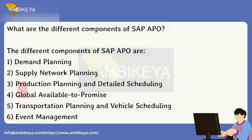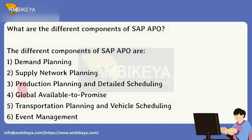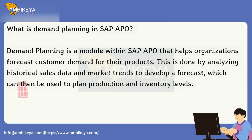What are the different components of SAP APO? The different components of SAP APO are: 1. Demand Planning, 2. Supply Network Planning, 3. Production Planning and Detailed Scheduling, 4. Global Available to Promise, 5. Transportation Planning and Vehicle Scheduling, 6. Event Management.